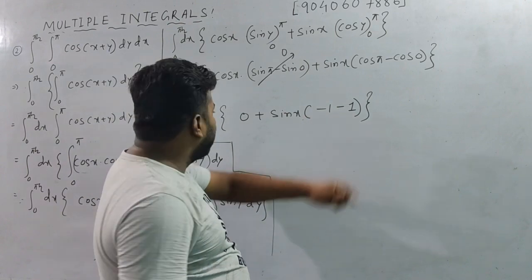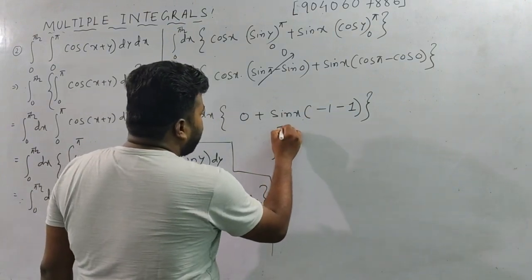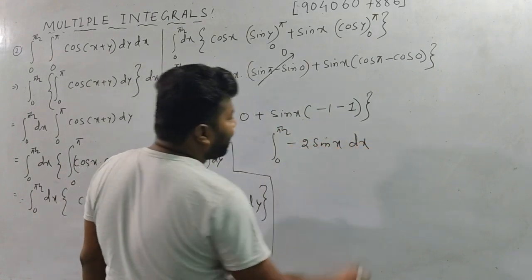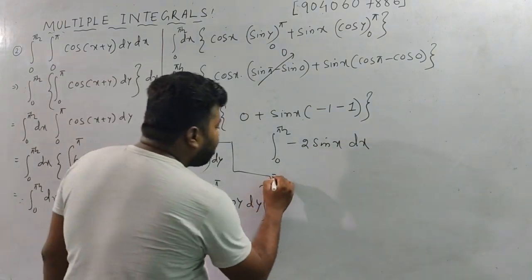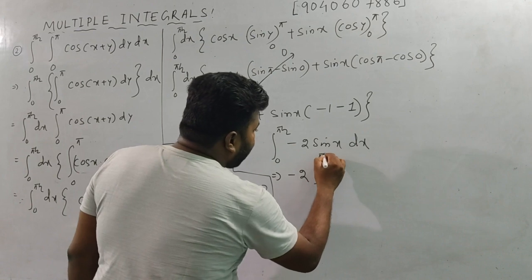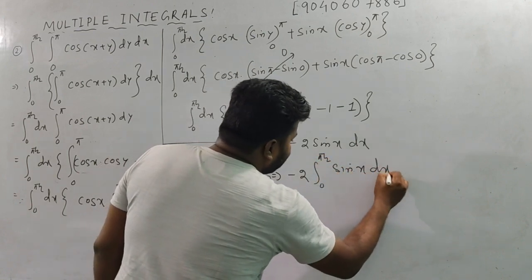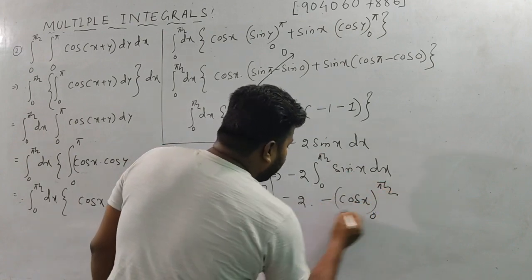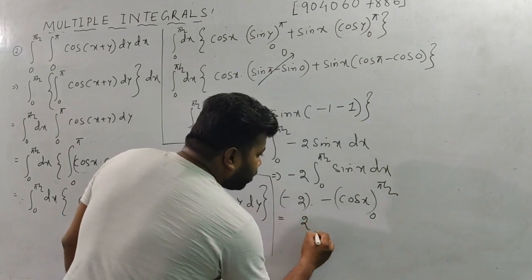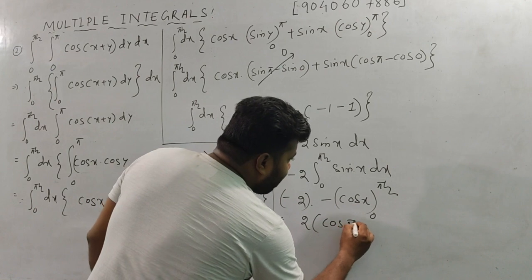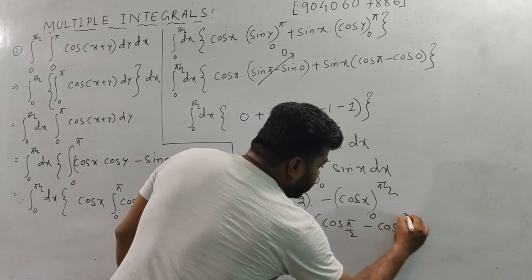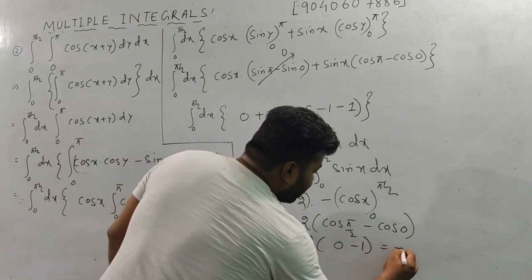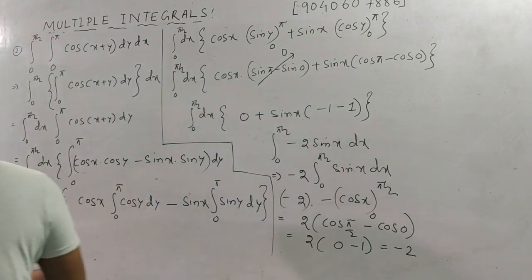So now integrate from 0 to π/2 of −2 sin x dx. That is −2 times [−cos x] from 0 to π/2 = +2 times [cos(π/2) − cos 0] = 2 times [0 − 1] = −2. The final answer is minus 2.